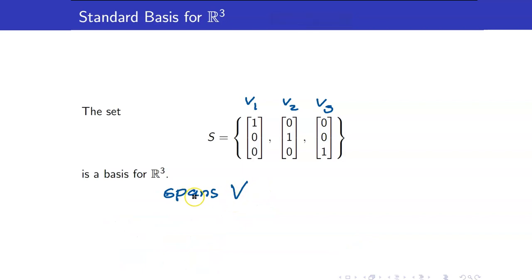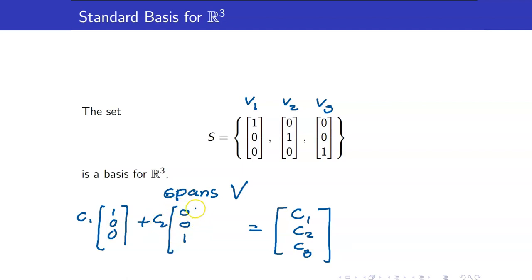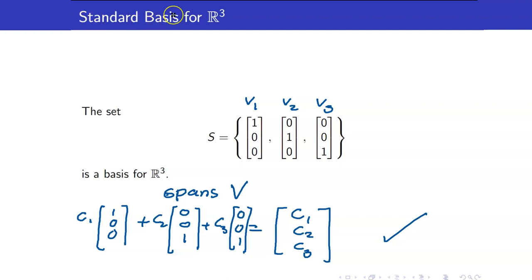Therefore, we get that a1 = 0, a2 = 0, and a3 = 0, so indeed it is linearly independent. Next, let us check the second condition: it must span V. We have seen already in our previous lectures that this set really spans V. If we take an arbitrary element in R3, say (C1, C2, C3), we can write it as C1·V1 + C2·V2 + C3·V3, so it spans the entire vector space.